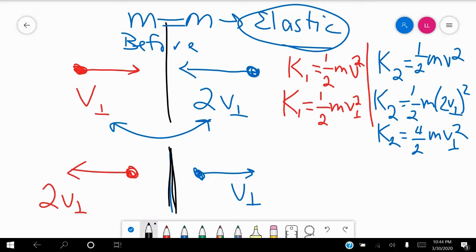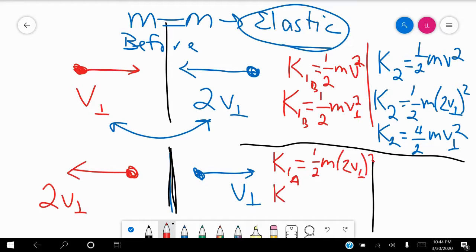So now if we look at the after side, if we do the same thing, note that K1, after, we have a little b for before and after, so after, it now has the 2V perpendicular speed,